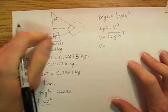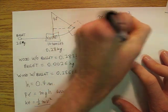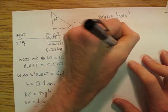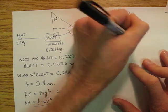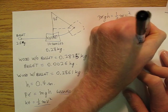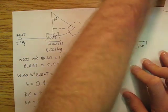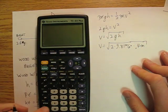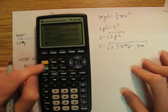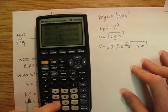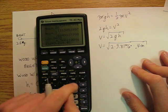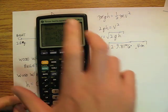So 2gh equals v squared, which means v equals the square root of 2gh. So we're going to say that the velocity of the block of wood at the bottom was the square root of 2 times 9.81 meters per second squared times 0.4 meters, which equals 2.8 meters per second.